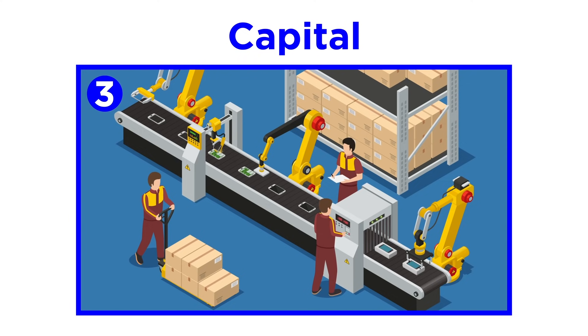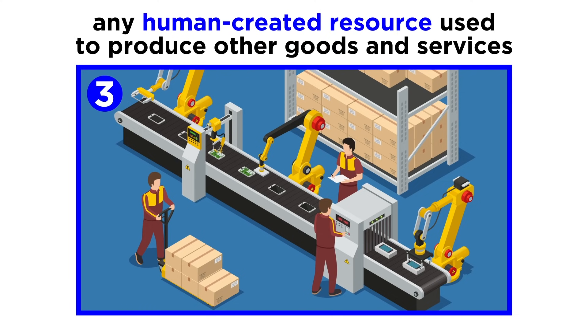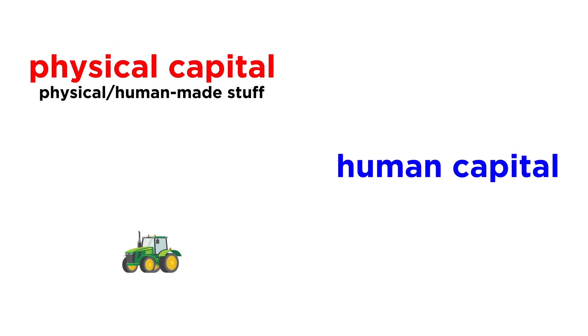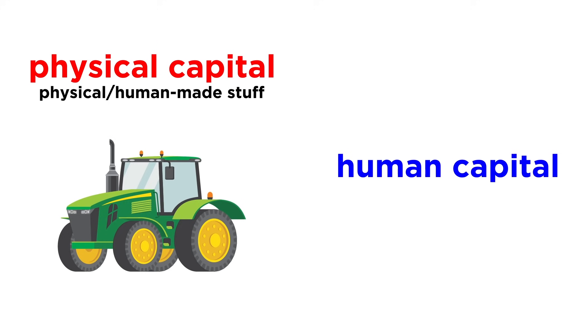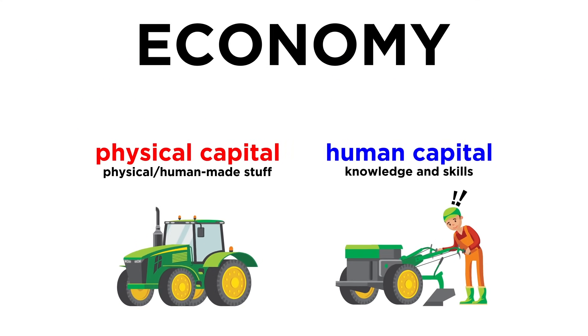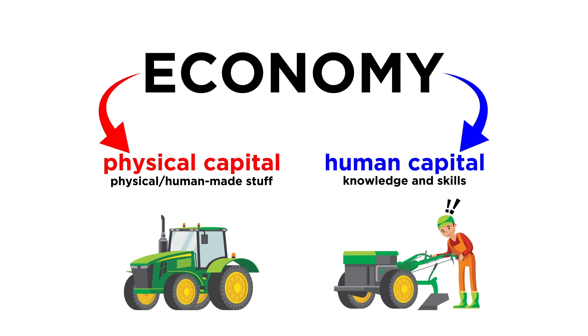Third, you need capital. In this context, capital refers to any human-created resource that is used to produce other goods and services. There are two types of capital: physical capital and human capital. Physical capital is the physical, human-made stuff that produces other stuff or aids in its production. For example, a tractor is physical capital because it helps the farmer plow fields to produce crops. Human capital is the knowledge and skills a person gains through both education and experience. The farmer knows how to plow fields because they have spent years doing it. An economy needs both physical and human capital in order to function properly.